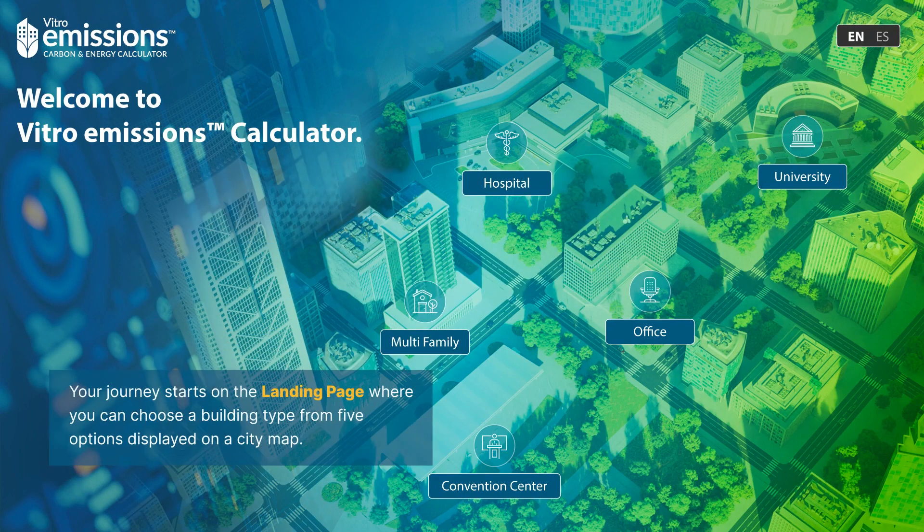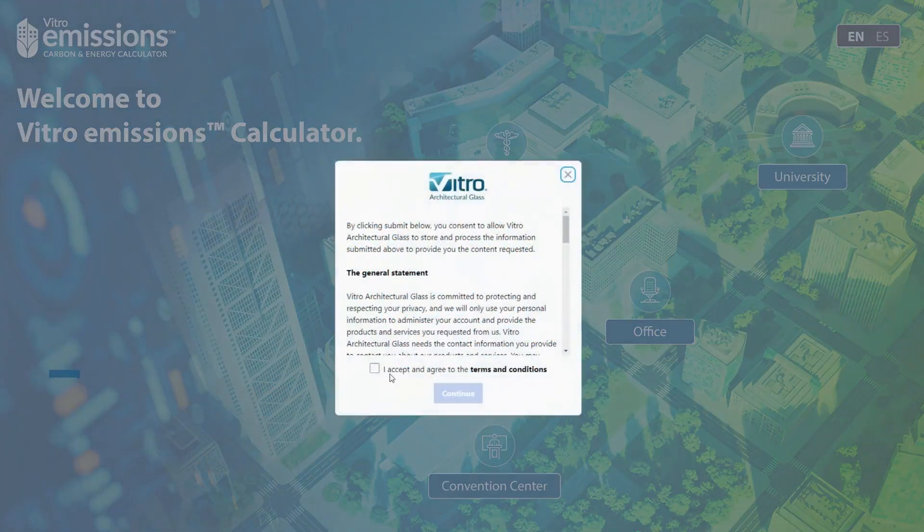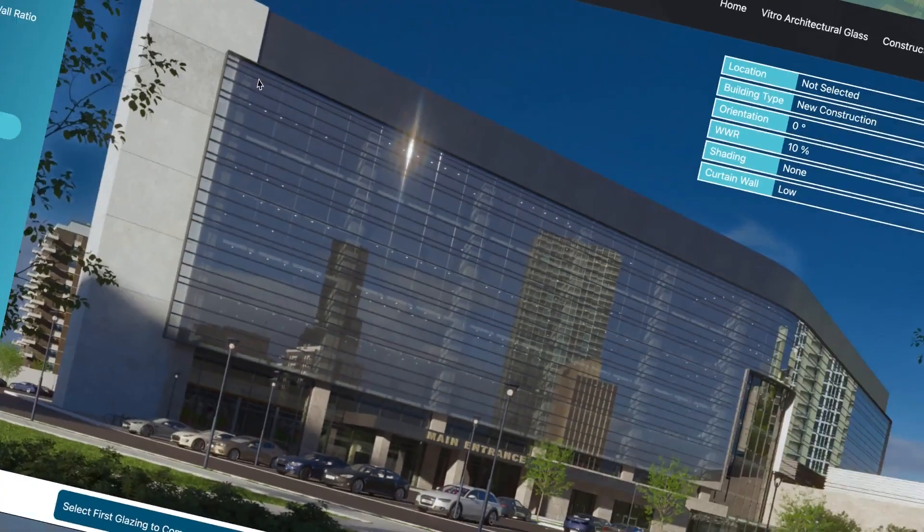Your journey starts on the landing page where you can choose a building type from five options displayed on a city map. Choose any building to get started.